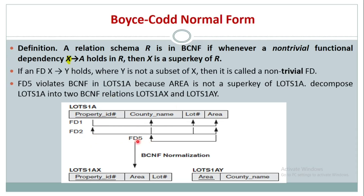We have to convert this relation schema into Boyce-Codd normal form by decomposing the table — lots1a — into lots1a_X and lots1a_Y. The violating dependency is area determines county name. So we remove county name from the original table and create a separate table with area as the primary key. The remaining table has property ID, lot number, and area. Now I can say this table is in Boyce-Codd normal form.